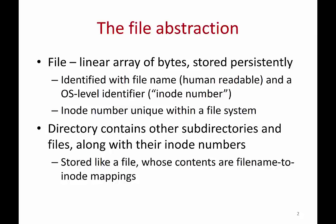So what is a file? A file is simply an array of bytes that is stored persistently on a disk or some such persistent media. A file is identified with a file name — a human readable name with some name and an extension specifying the type of the file. Every file also has an OS level identifier, a unique number given by the operating system called the inode number. Every file has a file name and an inode number, which is unique within a file system.